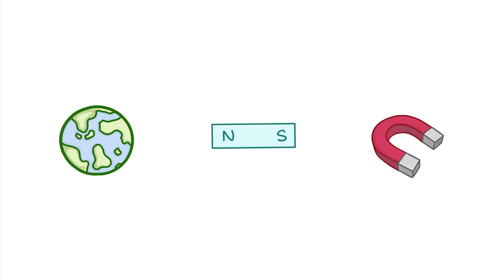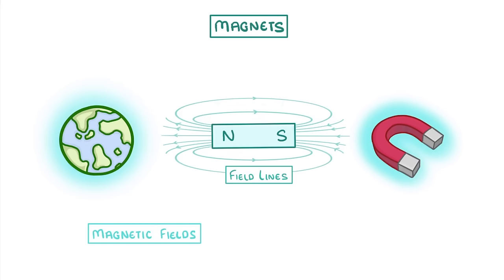In today's video we're going to learn about magnets and specifically how we represent magnetic fields using field lines. A magnet is any material or object that produces a magnetic field. The most common type of magnet you'll see